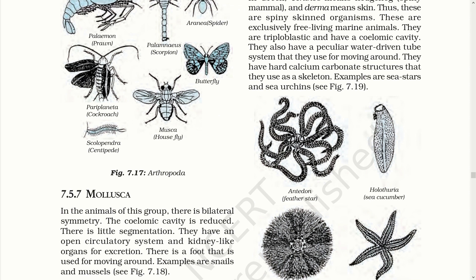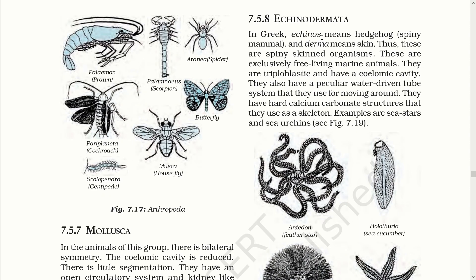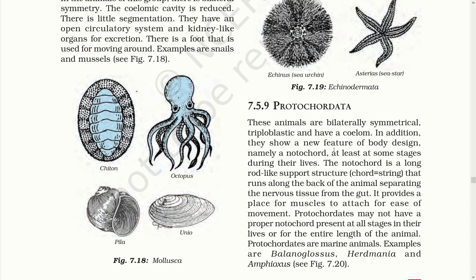In Mollusca, the coelomic cavity is reduced compared to others and they have a kidney-like structure for excretion, as well as a foot used for moving. In Echinodermata, these organisms have spines on their body and are mostly marine animals with a hard structure formed by calcium carbonate — hence called Echinodermata. Protochordates are so called because they have a notochord at some stage in their life which provides a place for muscles to stay attached for movement. They also have a nervous system separated from the gut. They do not have the notochord throughout their life, only at some stages.